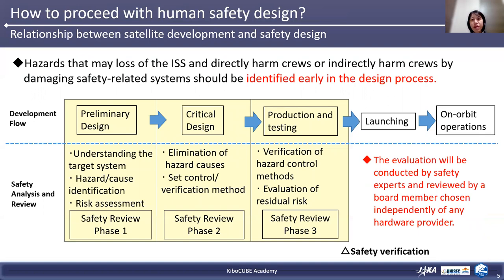I will explain how to proceed with safety design. In order to prevent loss of the ISS and death or injury to crews, hazards should be identified at an early stage of the design process and kept under control during the development phases. The development flow of a satellite consists of a preliminary design phase, critical design phase, and production and testing phase. During the preliminary design phase, the satellite provider should carry out understanding the target system, hazard and hazard cause identification, and risk assessment from the view of safety design. At this stage, you need to pass phase one of the safety review.